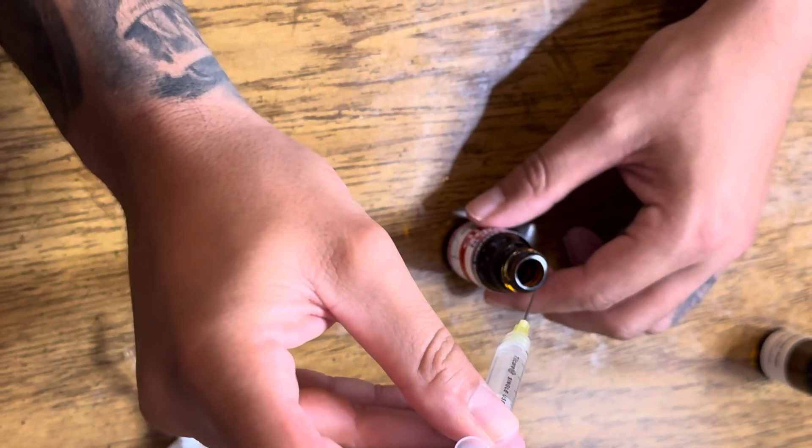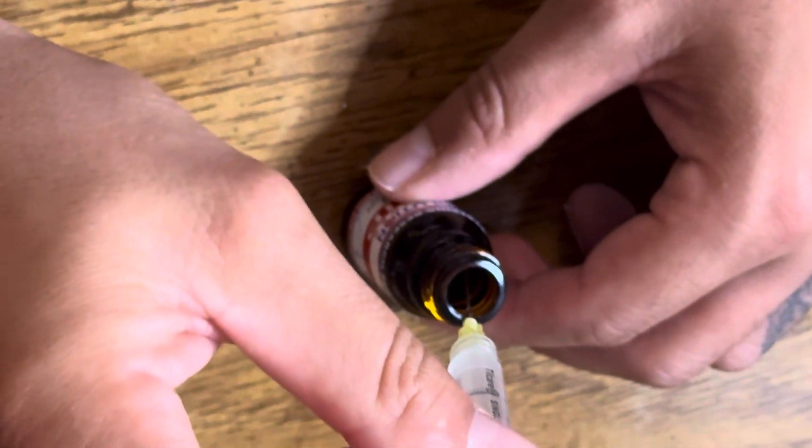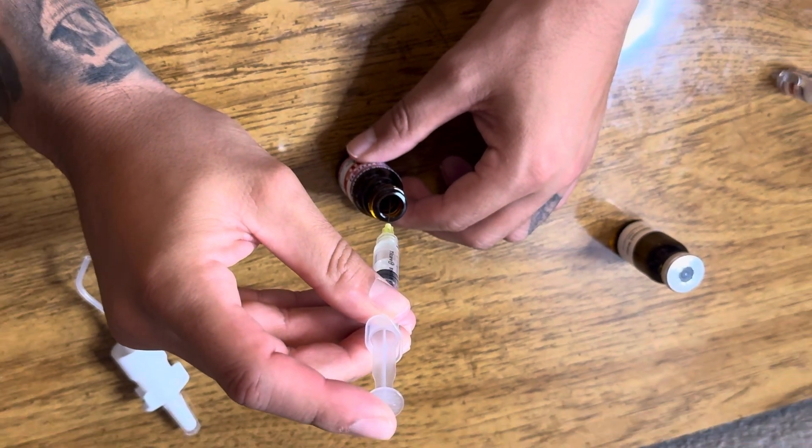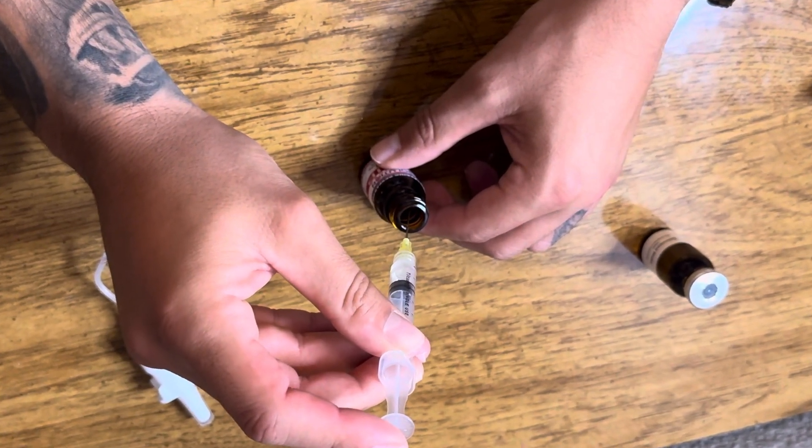Next step is to put the peptide into the vial, the spray vial. You want to go slowly and at an angle so it does not hit too hard.